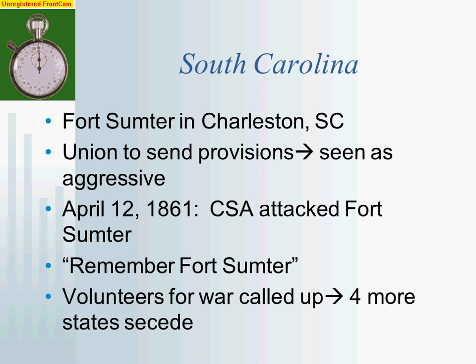Fort Sumter became the rallying cry for the North, as the South was seen as the aggressors from a Northern perspective. Volunteers were called up, allowing Lincoln to begin this war without taking the blame for starting it. 75,000 militiamen were called to volunteer. The South saw this as the U.S. waging war upon them, and so four more states seceded — Virginia, Arkansas, Tennessee, and North Carolina. With the secession of Virginia, Richmond, Virginia was declared the new capital of the Confederacy, which is extremely important because of how close it is to Washington, D.C.